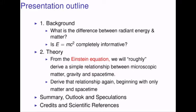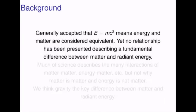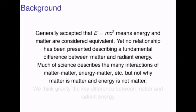We will present some credits, and please stick around for some scientific references. It is generally accepted that E equals mc squared, which means energy and matter are considered equivalent. Yet no relationship has been presented describing a fundamental difference between matter and radiant energy. Much of science describes the many interactions of matter-matter, energy-matter, energy-energy, but not why matter is matter and energy is not matter.